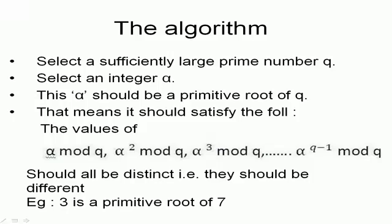You can check by calculating 3 mod 7, 3 square mod 7, 3 cube mod 7, up to 3 raised to 6 mod 7. All the values will be different. The reason that alpha should be a primitive root of Q will be discussed later.